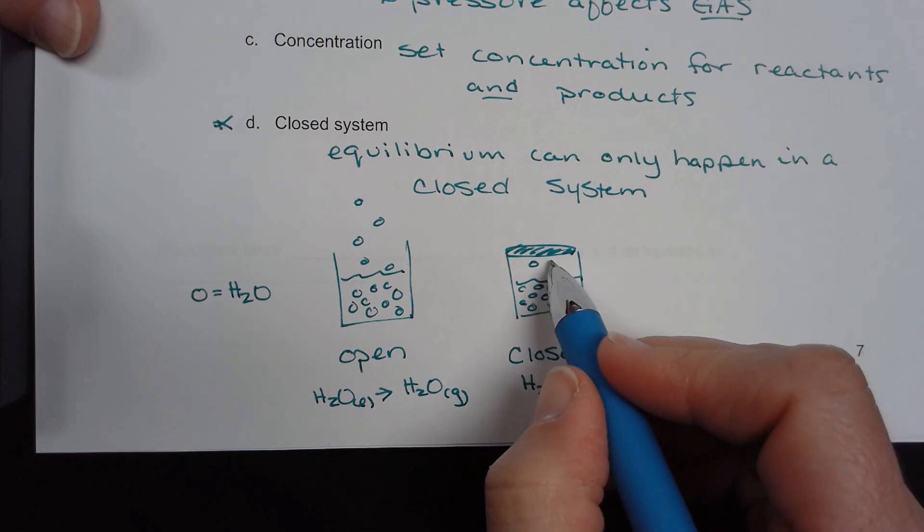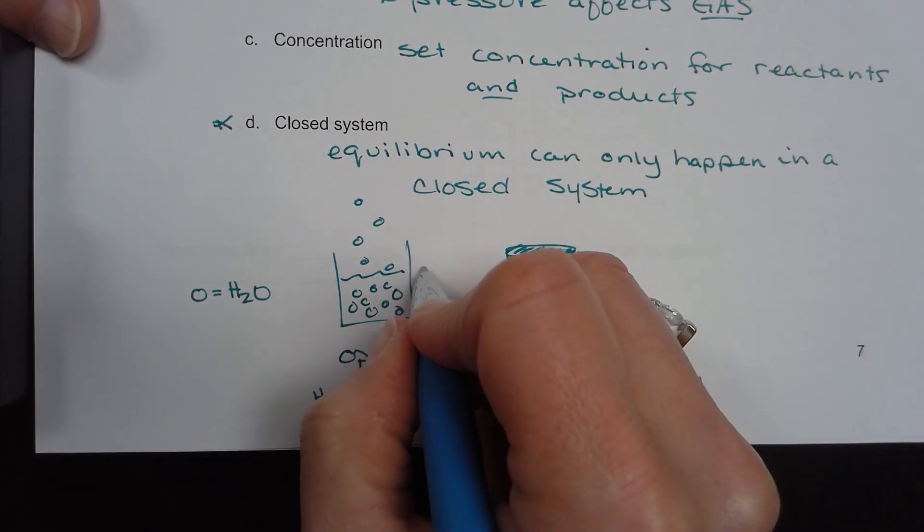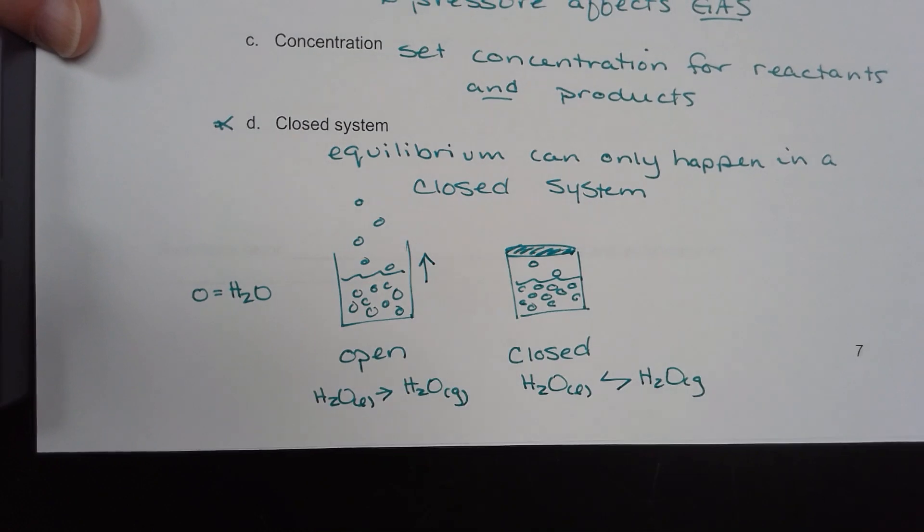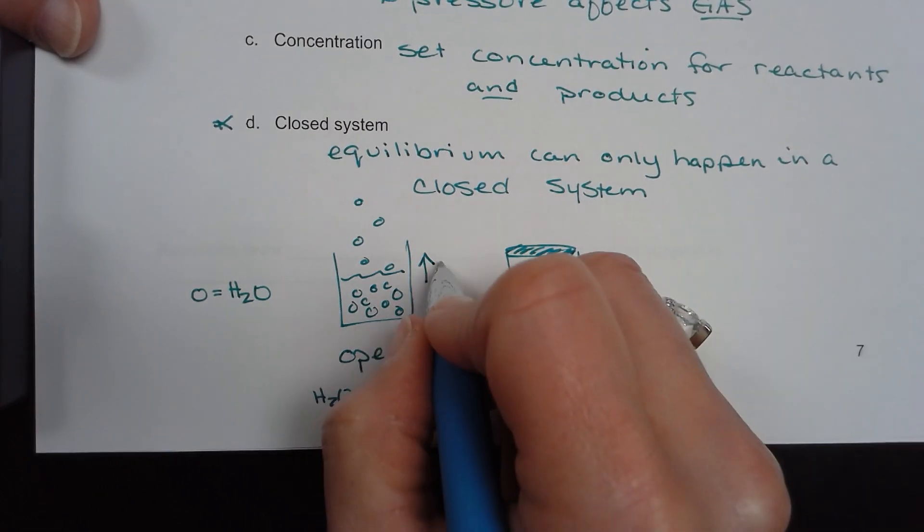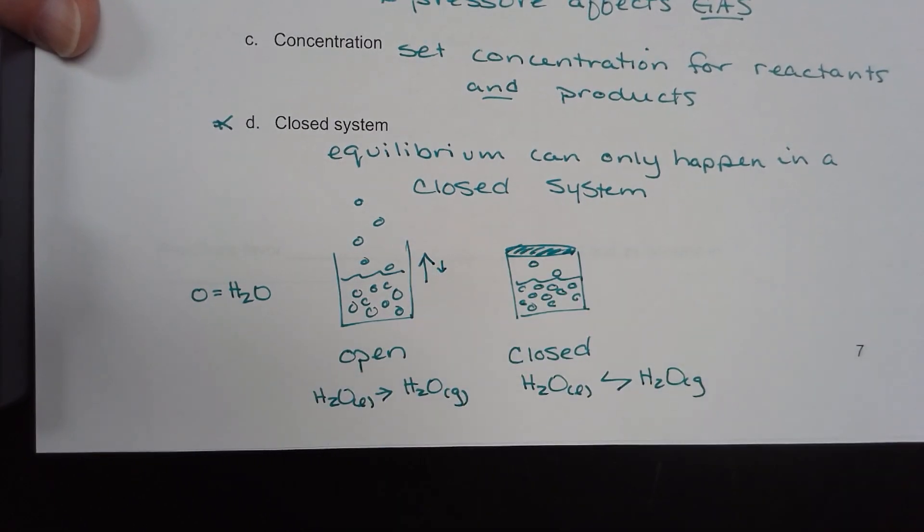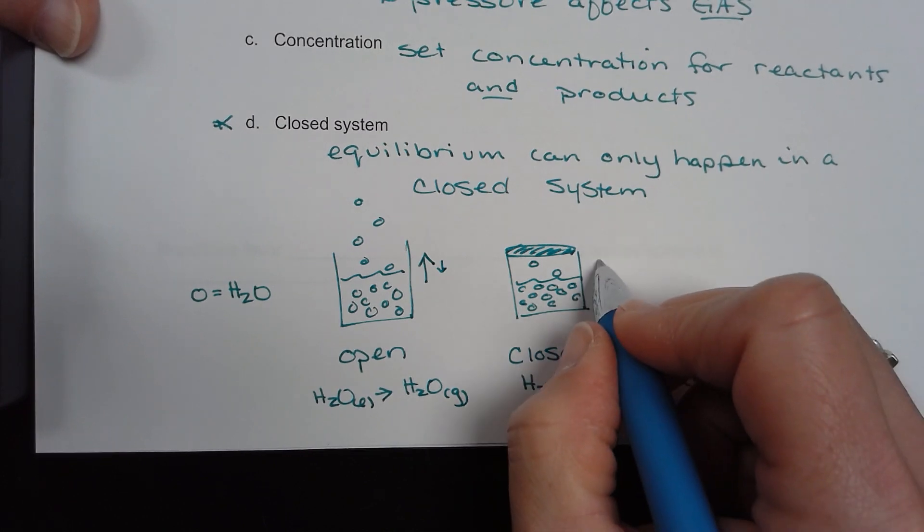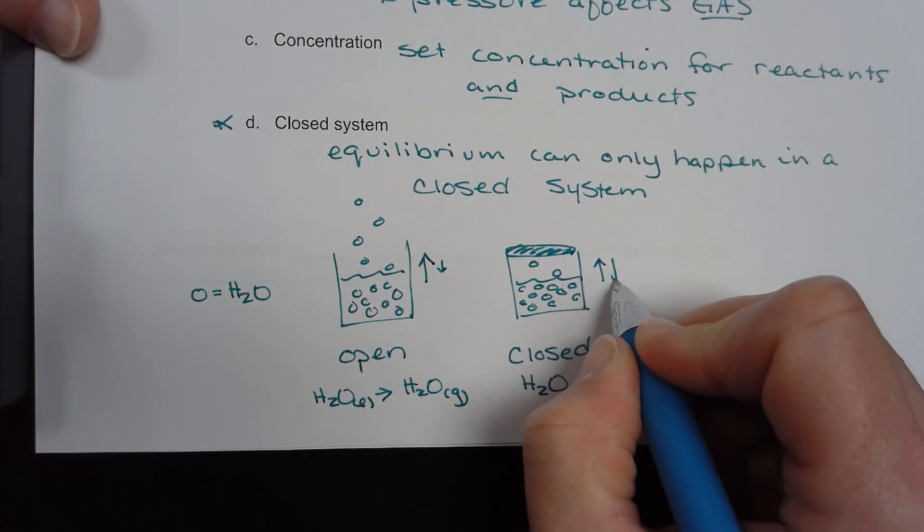Because as those gas molecules escape, they go back in. So if I were to draw an arrow, we've got some going up here and a few going back down into solution. Here, the amount evaporating is the same as the amount condensing.